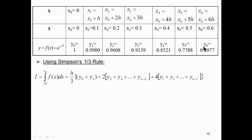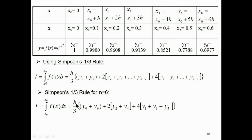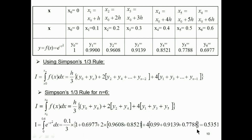This is Simpson's 1/3 rule for n = 6 strips: I = (h/3) × [y0 + y6 + 2 × (y2 + y4) + 4 × (y1 + y3 + y5)]. Note that y6 is already taken, so only y2 and y4 appear as even terms, and y1 + y3 + y5 are the odd terms. By substituting all values of y, the integration using Simpson's 1/3 rule equals 0.5351. Thank you.